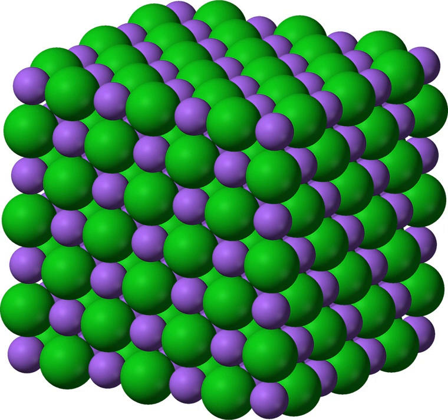Some ions are classed as amphoteric, being able to react with either an acid or a base. This is also true of some compounds with ionic character, typically oxides or hydroxides of less electropositive metals, so the compound also has significant covalent character, such as zinc oxide, aluminium hydroxide, aluminium oxide and lead oxide.